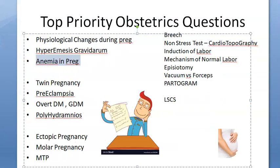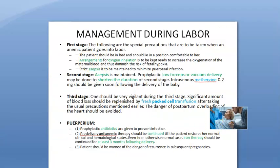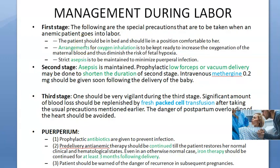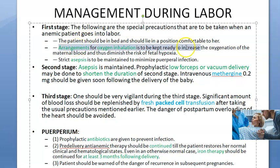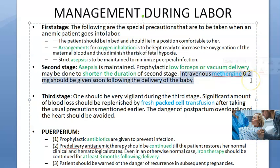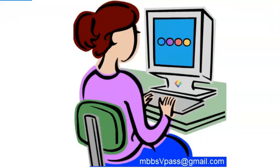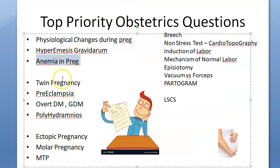During labor management of anemia: maintain asepsis, give oxygen, use forceps or vacuum delivery to shorten the second stage of labor to reduce cardiac strain. Give methergine as soon as the baby is delivered so the uterus contracts and blood loss is minimized. Keep fresh packed cells ready. In puerperium, give antibiotics and continue iron therapy. Advise the woman not to get pregnant again too soon.